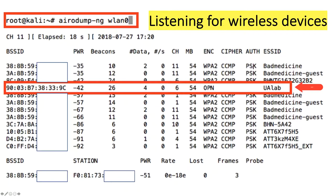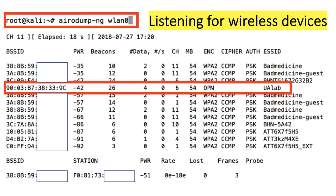Now I'm listening to all the wireless devices in the vicinity — quite a few of them. Notice we have ESSIDs: Bad Medicine, Bad Medicine Guest, Bright House Networks, AT&T, and so on — essentially all the Wi-Fi access points in the area. Going down, we find one called UALab, which as I described in the second video is the drone's own Wi-Fi access point. Notice in the ENC column that all of them have WPA2 encryption except the drone. We can find the MAC address of the drone right here and now have enough information to perform the attack.